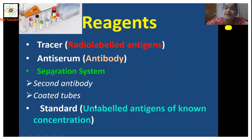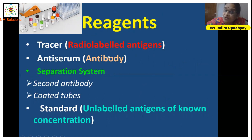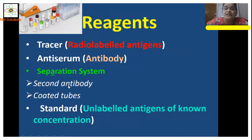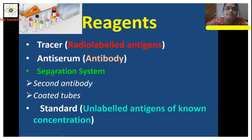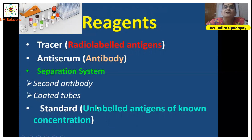The reagents in RIA are: the tracer, which is the radio-labeled antigen; the antiserum, which is the antibody to these antigens; and the separation system, which can be a second antibody — an antibody to the first antibody — that pulls down the complexes to a precipitate after centrifugation. There are also coated tubes, which have the antibody that can bind the antiserum and radio-labeled antigen complexes and keep them in the tube; when the tubes are inverted, the unbound fraction goes away. The standard consists of unlabeled antigens of known concentration prepared in different aliquots — also called cold antigens.